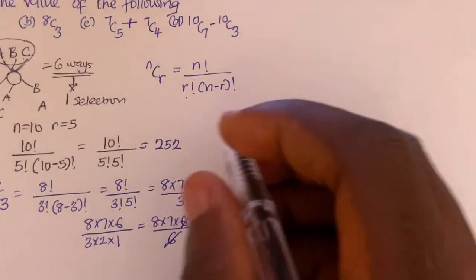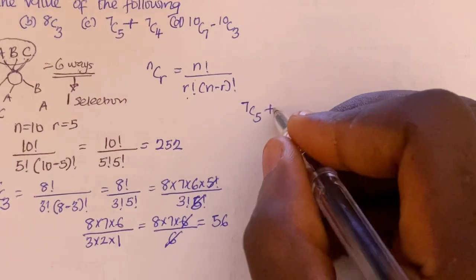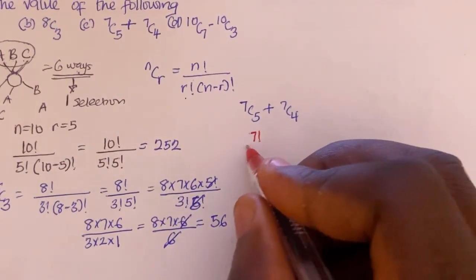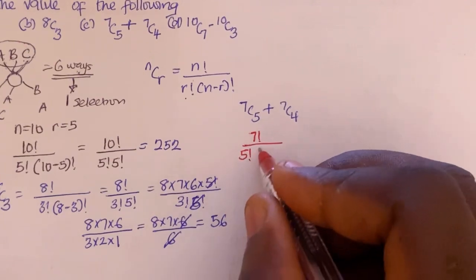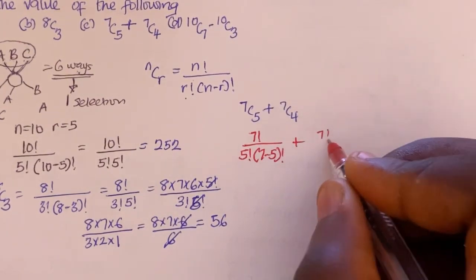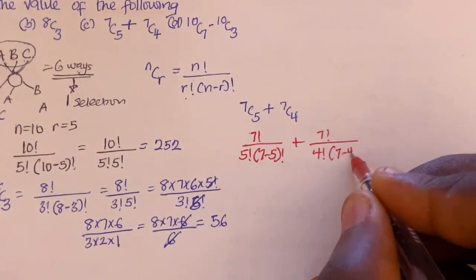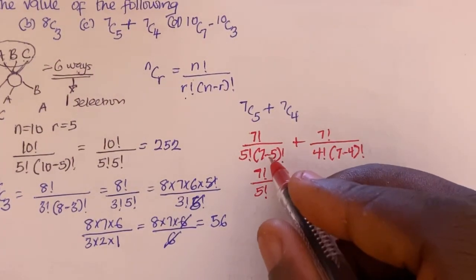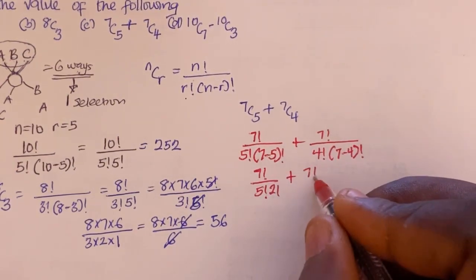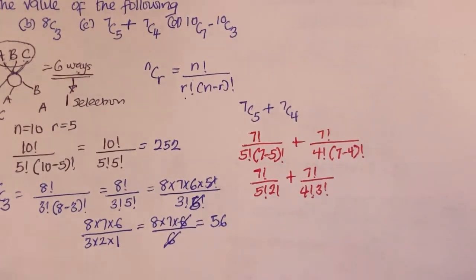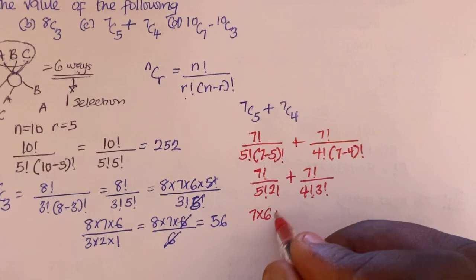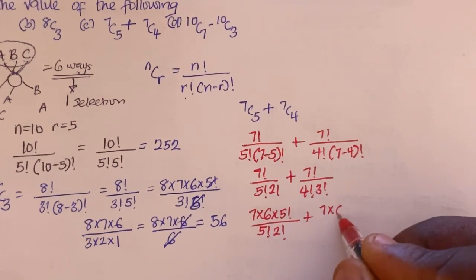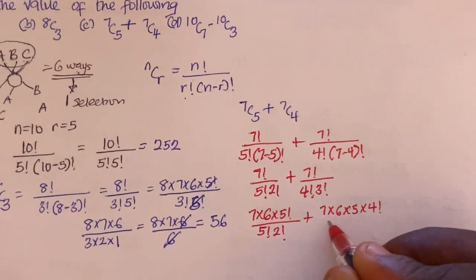The third question is 7C5 + 7C4. For 7C5, we have 7! divided by (5! × (7 − 5)!), and for 7C4, we have 7! divided by (4! × (7 − 4)!). This gives us 7! divided by (5! × 2!) plus 7! divided by (4! × 3!). Expanding: (7 × 6 × 5!) divided by (5! × 2!) plus (7 × 6 × 5 × 4!) divided by (4! × 3!).